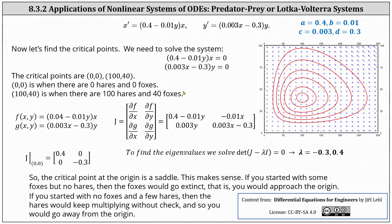For the next step, we determine the Jacobian matrix where f(x, y) equals x prime and g(x, y) equals y prime. For the entries in the Jacobian matrix: the partial of f with respect to x is 0.4 minus 0.01y; the partial of f with respect to y is negative 0.01x. In the second row, the partial of g with respect to x is 0.003y, and the partial of g with respect to y is 0.003x minus 0.3.